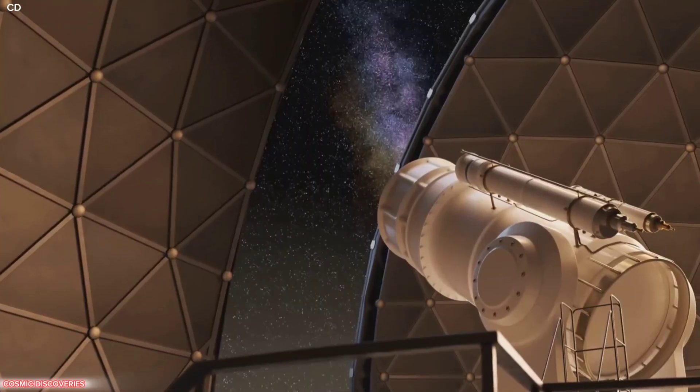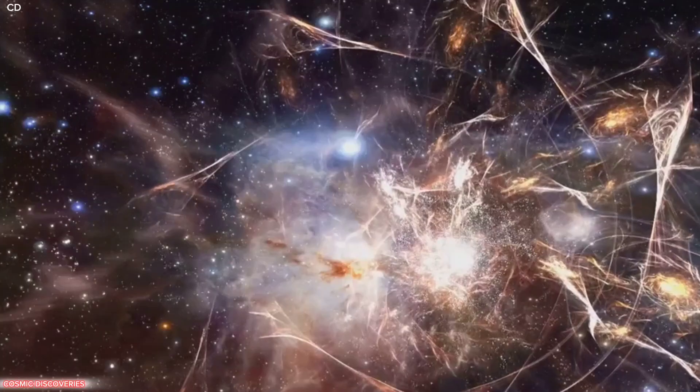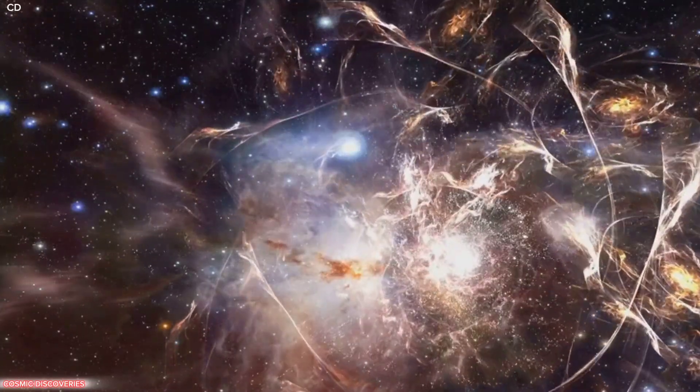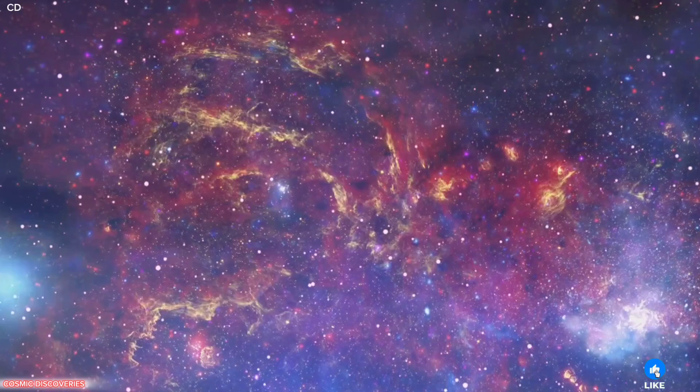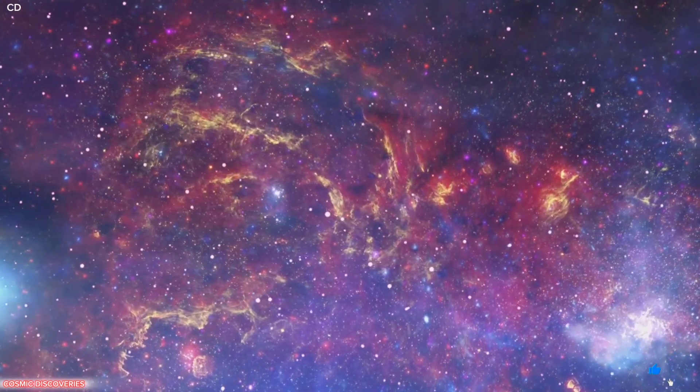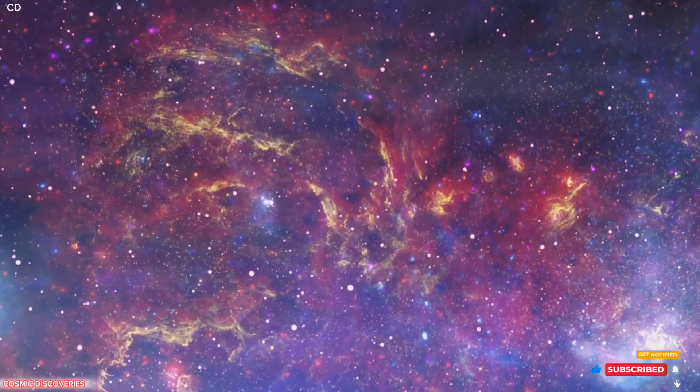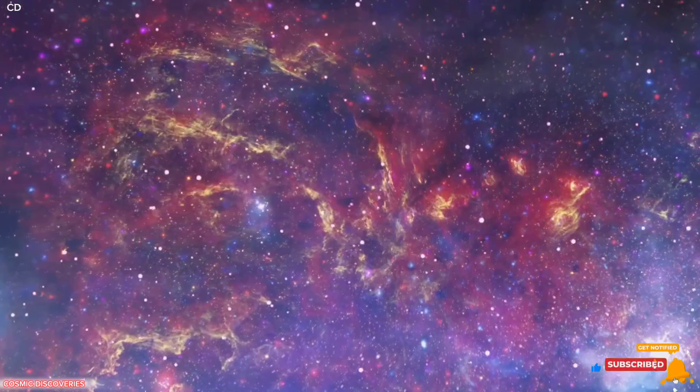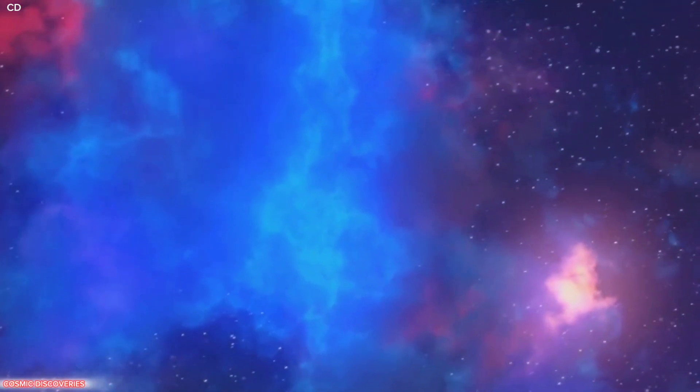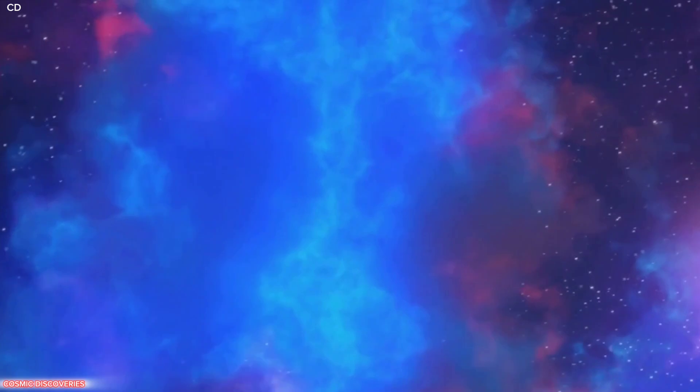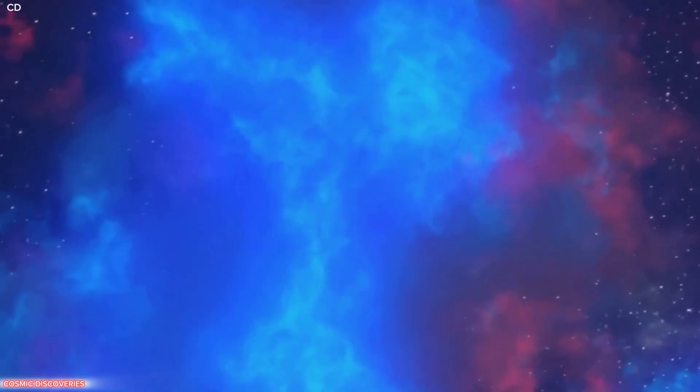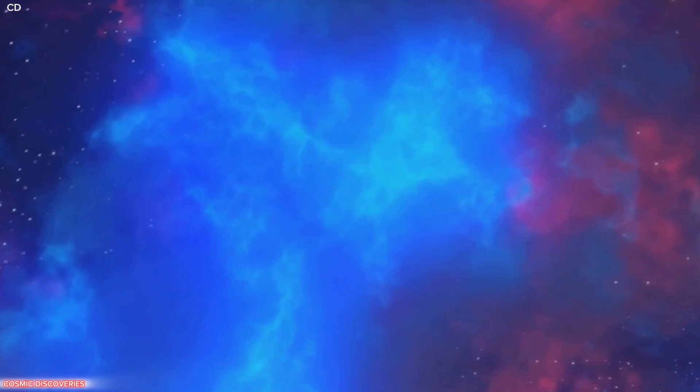Webb was built to pierce the ancient fog and reveal the universe's first structures. Now it has achieved just that. The result? A direct look at our cosmic origins. Let's turn to the image itself, a dark canvas sprinkled with countless points of light. Among them are faint reddish smudges, the most distant galaxies ever seen, as they existed over 13.4 billion years ago.